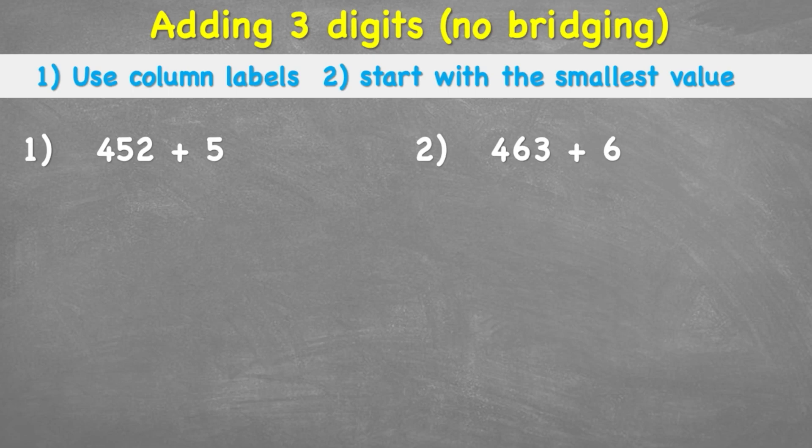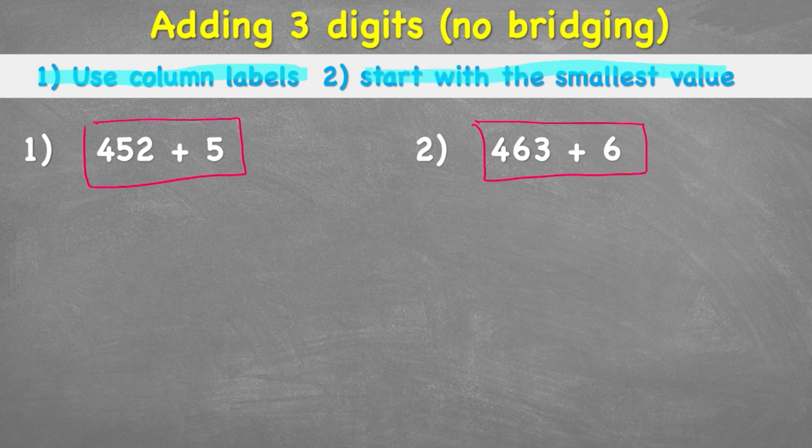Okay, so today we're going to look at these two questions. We have 452 add 5 and 463 add 6. And we're going to follow these steps. Our first step says that we're going to use column labels. We're going to see what that means in a minute. And step two says start with our smallest value.